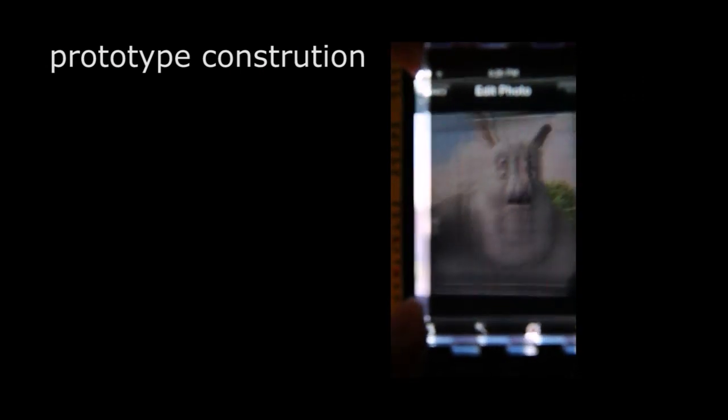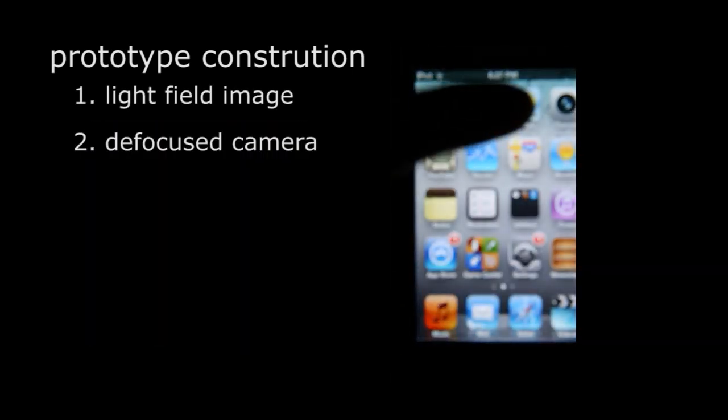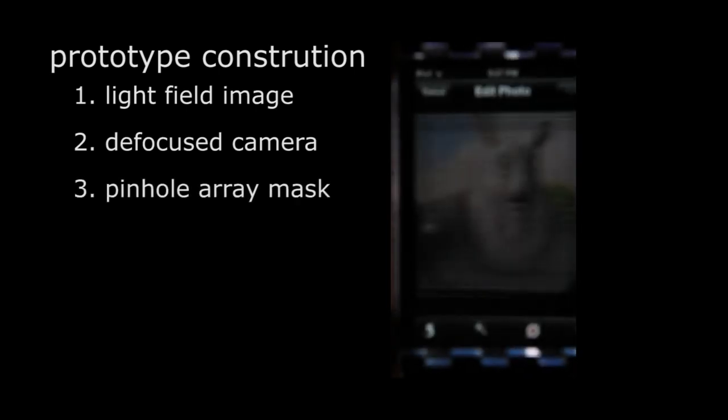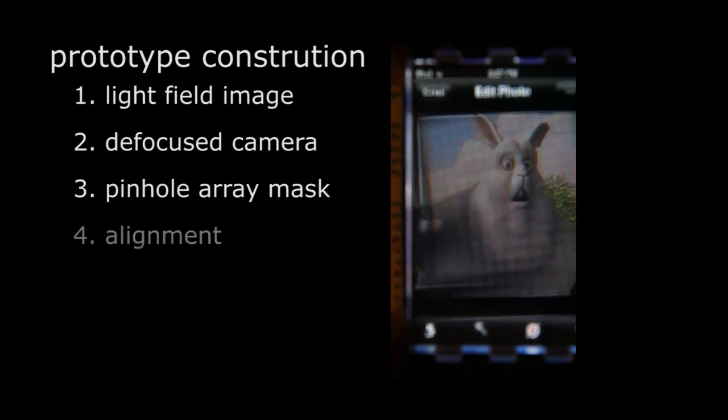The prototype is also easy to construct, and we will illustrate how to build it in a few seconds. We first show a pre-filtered light field image on display. When viewed by the defocus camera, everything is blurred. Placing a pinhole array mask on top reveals a sharp image after some alignment.